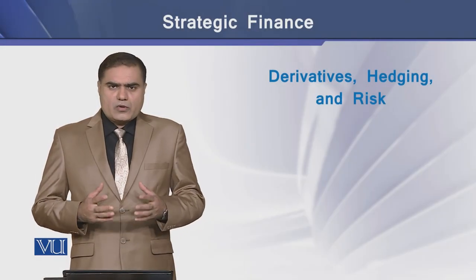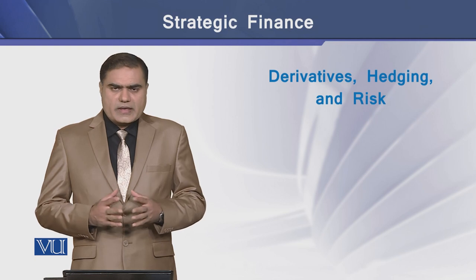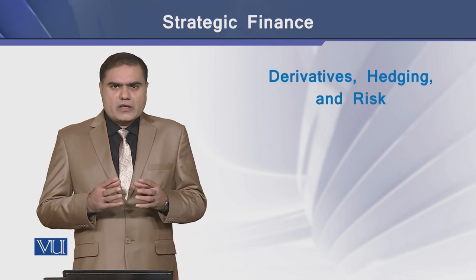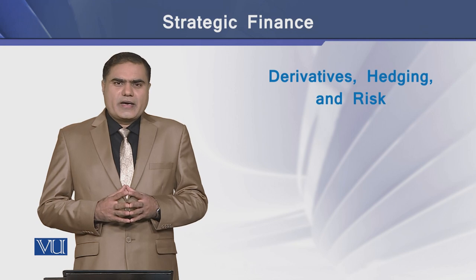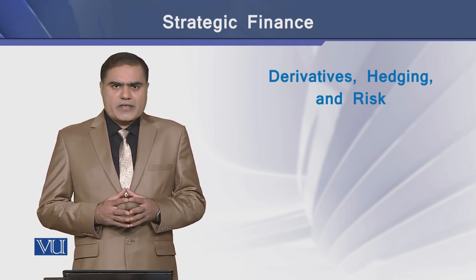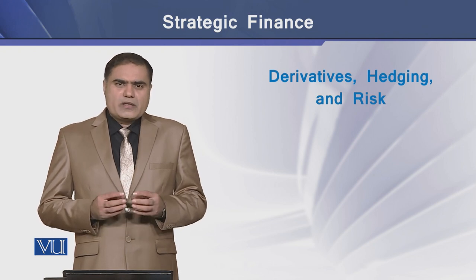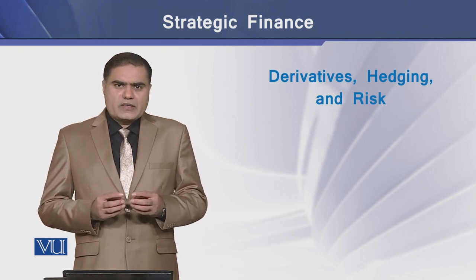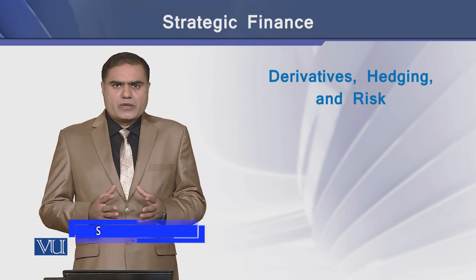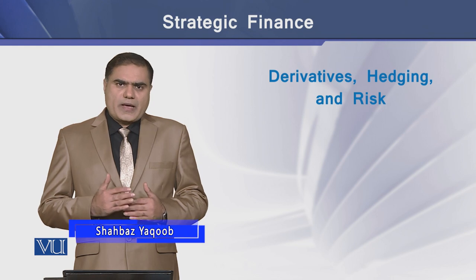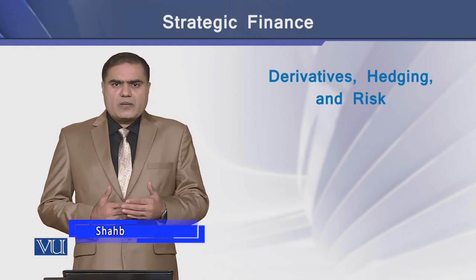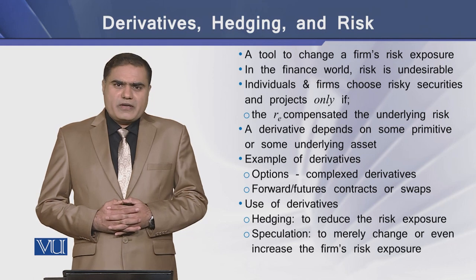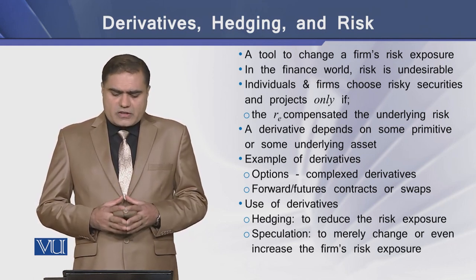Generally, a firm looks for ways to reduce its risk exposure. Derivatives, as the name signifies, is a financial tool that derives its value from some other underlying asset or object. It is a tool used by a modern day corporate firm in order to cut away some unwanted portion of the risk exposure, or the firm can even transform the risk exposure into some other quite different forms. So derivatives is a tool that is used to change the firm's risk exposure.